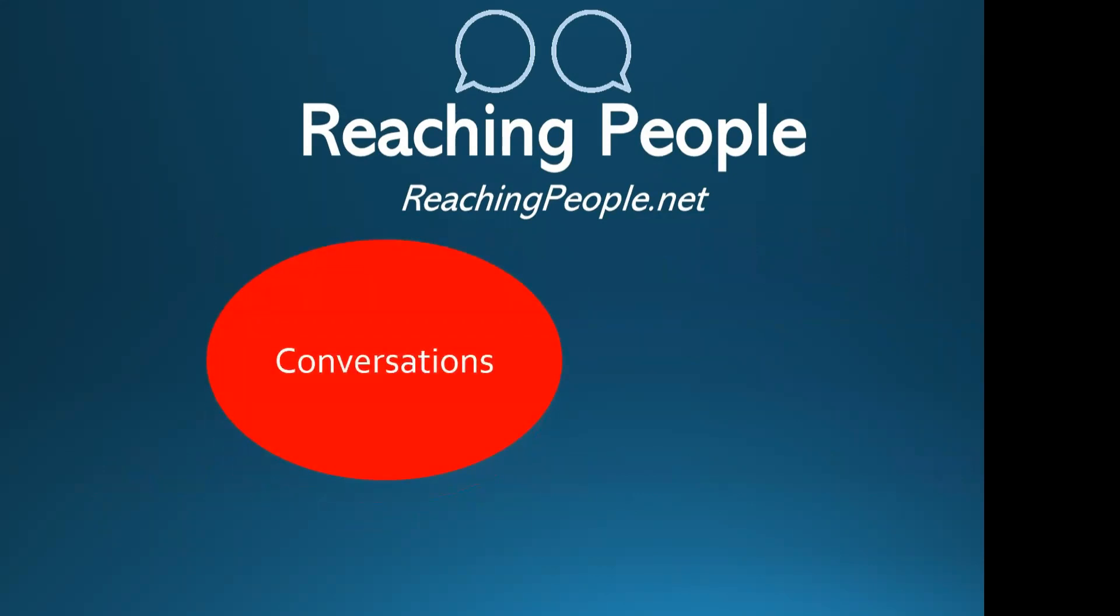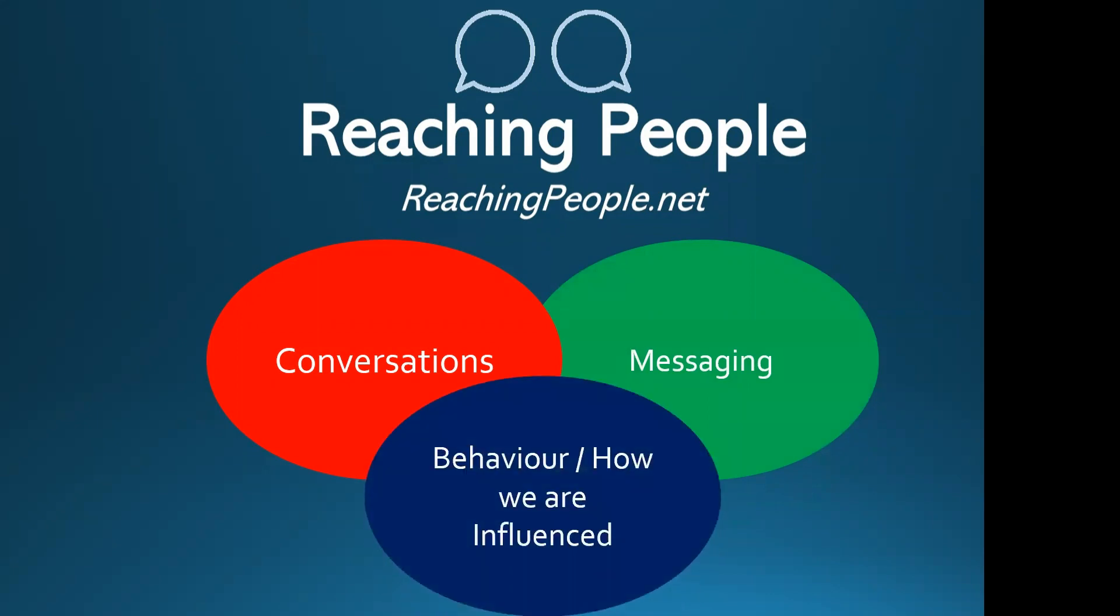The three pillars are understanding how to have a good conversation. This isn't how to influence someone, although that information is important to understand with ethical questions, but really how can we hold a conversation where two people can communicate and hopefully the truth can arise. How do we message to get important information out there? And thirdly, what we'll be looking at today is behavior and how we're influenced.